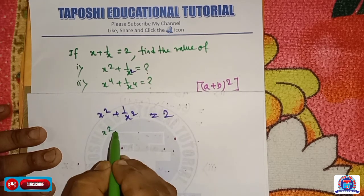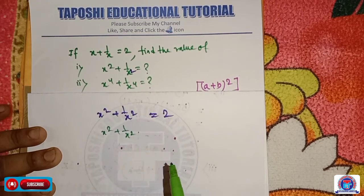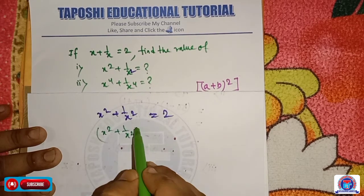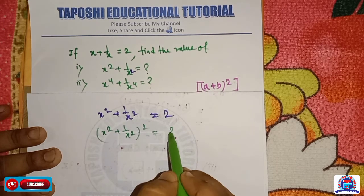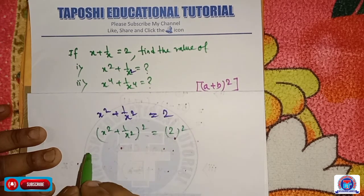So x square plus 1 by x square its whole square is equal to 2 its whole square.